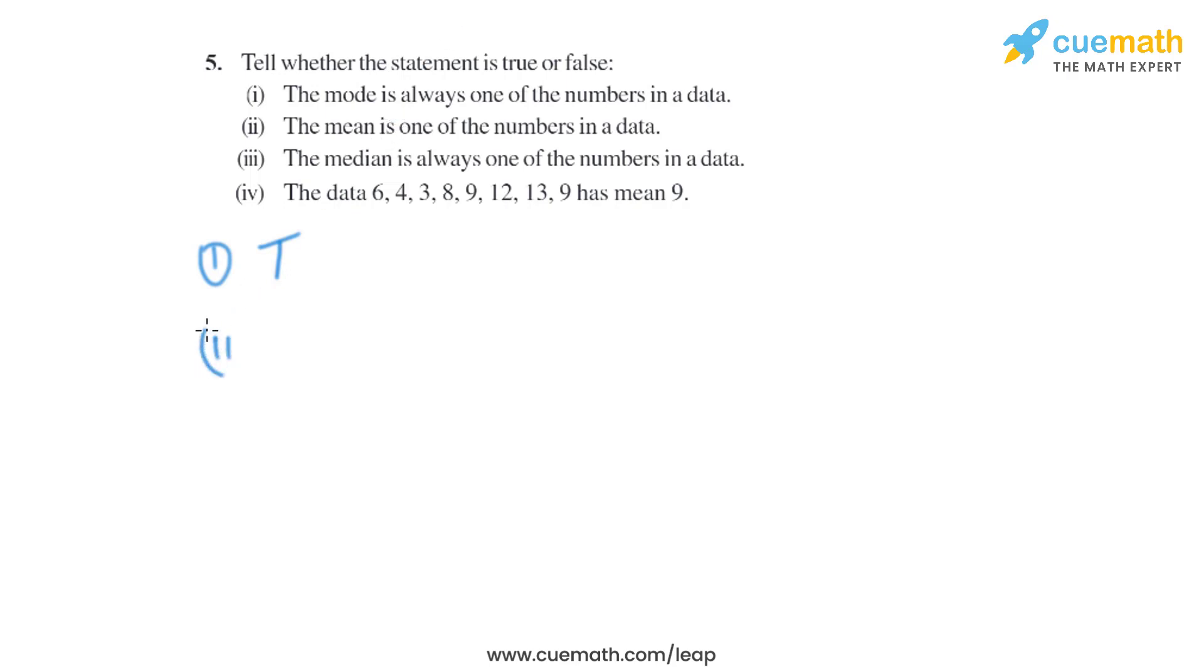Now let's move on to the second part: mean is one of the numbers in a data. That is not right, that is false. Let's take an example. In a data we have two numbers, 3 and 5, and we have to find the mean. It will be basically 3 plus 5 divided by 2.